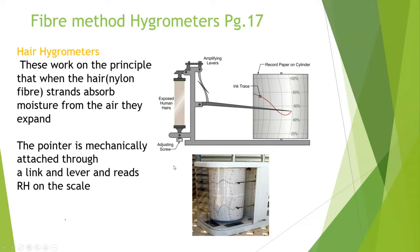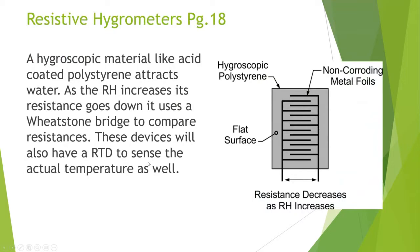The pointer is mechanically attached through a link and lever system. In fact, when visiting a museum in Montreal, a hair hygrometer from the 1800s made of oak was still in use to measure the moisture content of the room. The second type is a resistive hygrometer — an electronic style relative humidity measuring device. A hygroscopic material, specifically an acid-coated polystyrene, attracts water. As relative humidity increases, the material absorbs more water, becomes more conductive, and resistance goes down.